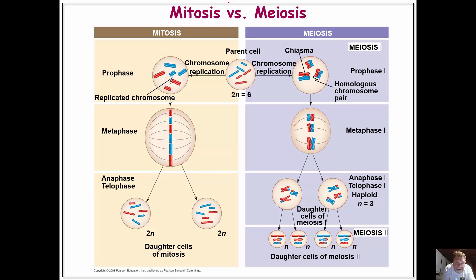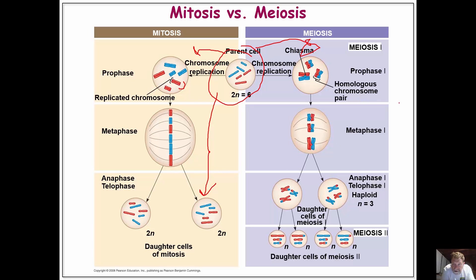Comparing mitosis and meiosis: we both start out with the same material and both begin with a duplication of the chromosomes. However, in mitosis we end up with daughter cells that are exact identicals — all we're doing is separating out the sister chromatids from one another. Whereas in meiosis, during metaphase I, we are separating the homologues — the maternal and paternal chromosomes — and we end up with genetically different gametes.